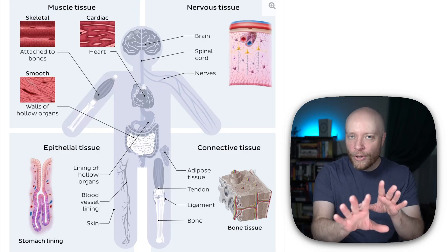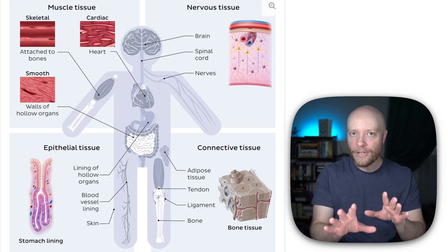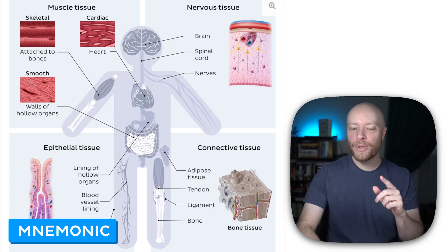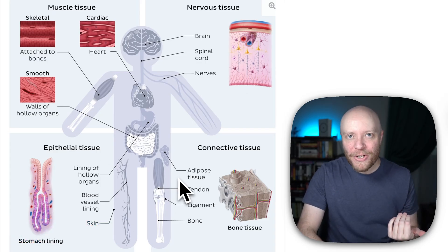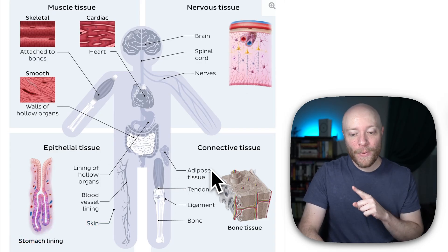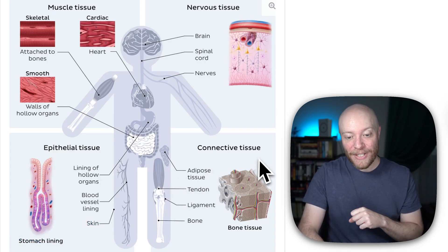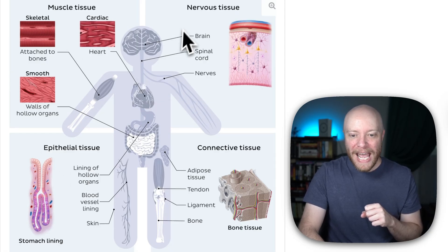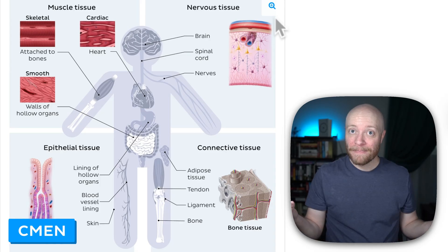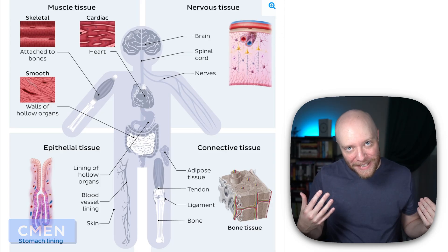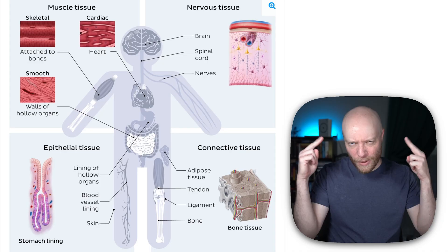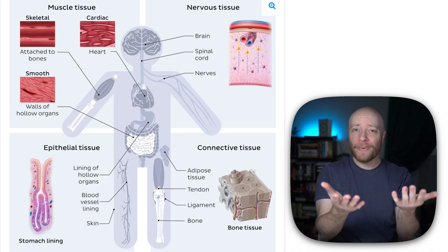Semen. Before you judge me too harshly, I want you to know that is a mnemonic — an acronym to help you remember the four basic tissues of the human body. It stands for connective tissue, muscle tissue, epithelial tissue, and nervous tissue. It's been my experience that if you make something slightly inappropriate, the mind is just more likely to remember it. So there you go.